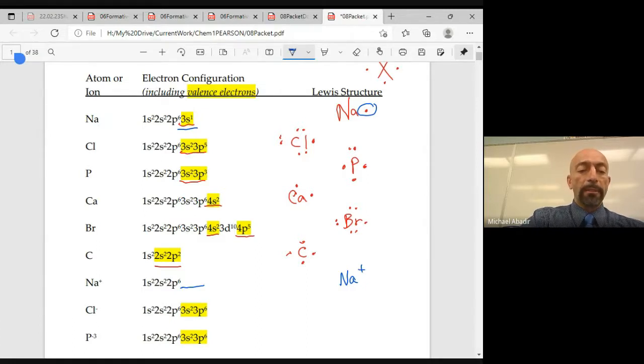Now this one is Cl minus, called chloride. Now remember this ended in 3p5, but if it gains an electron, it's going to end in 3p6. So now it's going to have a total of eight valence electrons. So you're going to go one, two, three, four, five, six, seven, eight, and then you have to put a minus sign to show that it has an extra electron.